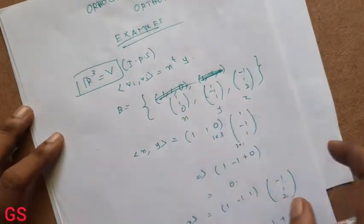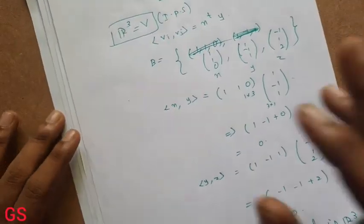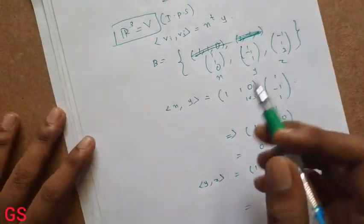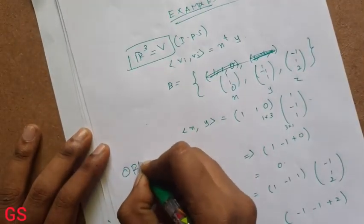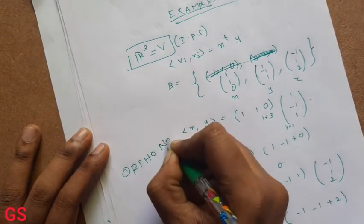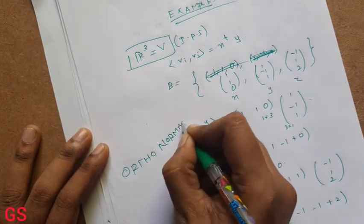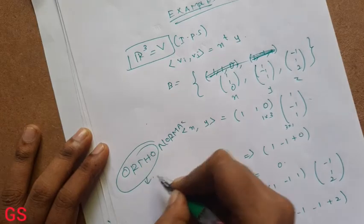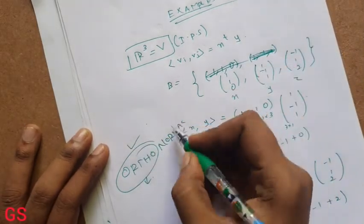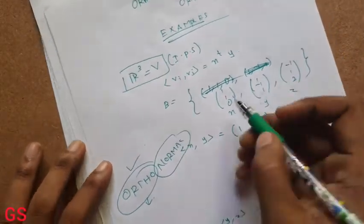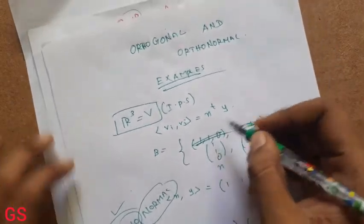Orthogonal set in R3. Okay, so in R3 this is an orthogonal set. Now ortho-normal — to check if it is ortho-normal, this is the norm.